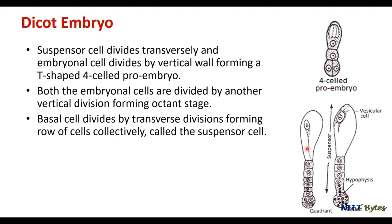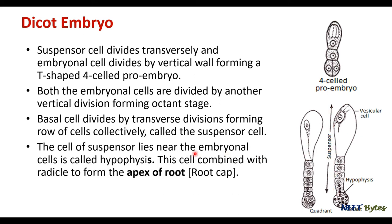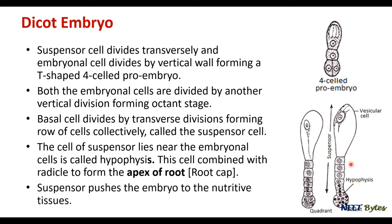The basal cell divides by repeated transverse divisions forming a row of cells called suspensor cells. The cell of the suspensor that lies nearest to the embryonal mass is called the hypophysis. This hypophysis is responsible for the formation of the root cap — it is the only part of the suspensor that participates in forming the embryo; otherwise the entire structure is formed by the octant cells.